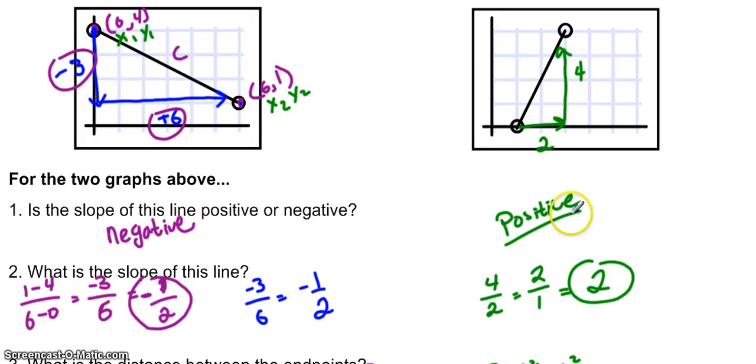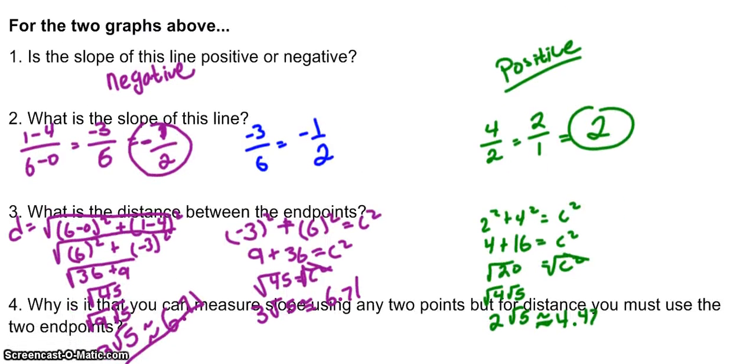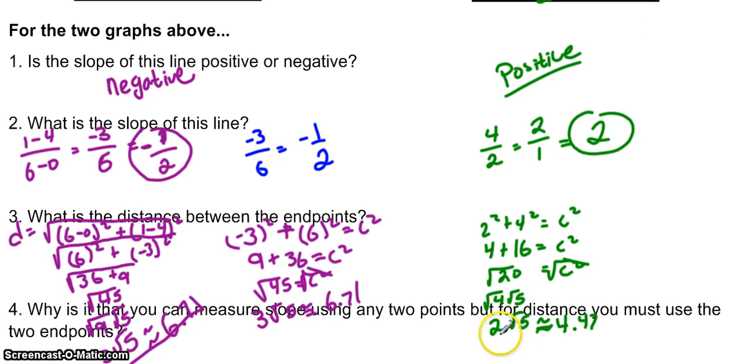Here are the answers for the second graph. The slope is positive. You can see that it's increasing right here. The slope of the line ends up being 2 once you simplify. The distance between the endpoints ends up being 2 radical 5 in simplest radical form or 4.47.